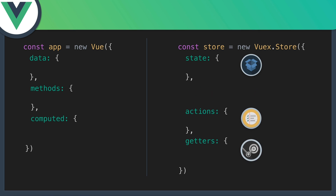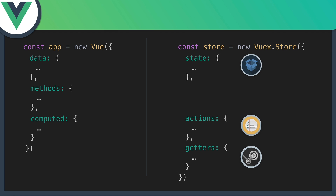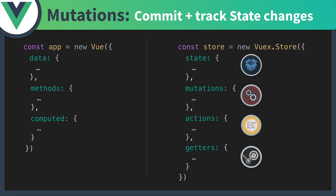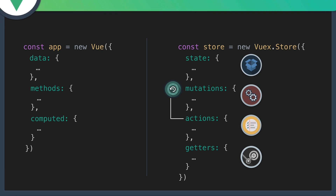The difference is the store also has mutations. Mutations are used to commit and track state changes. It's a best practice to have our actions call mutations which update our state directly. And by using the Vue DevTools, we can do time travel debugging and we can roll back a mutation which reverts the state to its previous value.